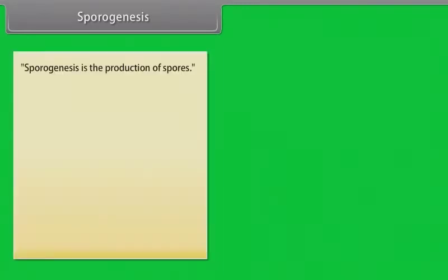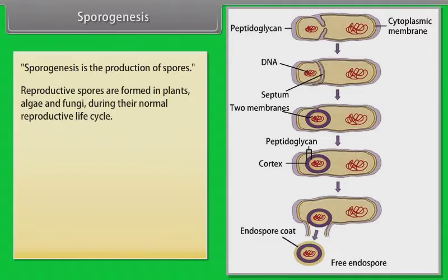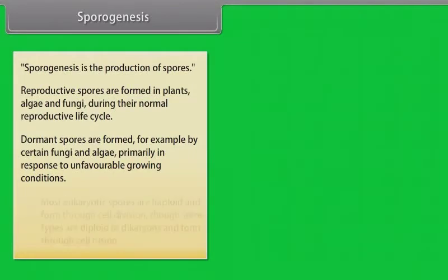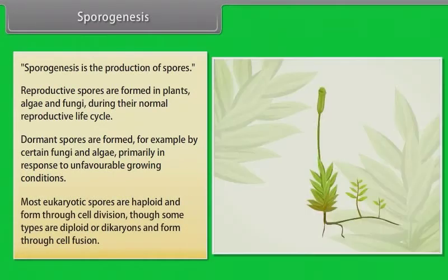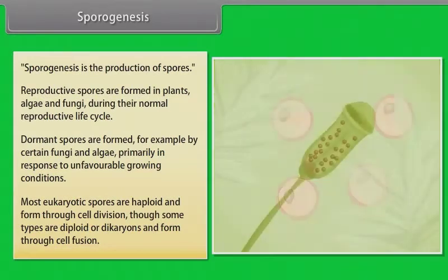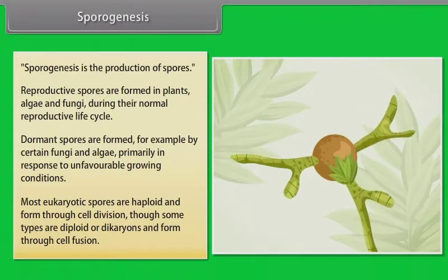Sporogenesis is the production of spores. Reproductive spores are formed in plants, algae and fungi during their normal reproductive life cycle. Dormant spores are formed, for example, by certain fungi and algae, primarily in response to unfavorable growing conditions. Most eukaryotic spores are haploid and formed through cell division, though some types are diploid or dicaryons and formed through cell fusion.